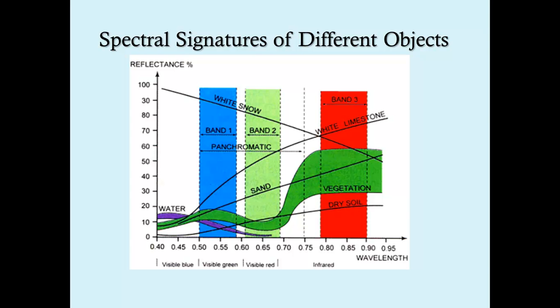You can see again that snow behaves differently than limestone, which is different from sand or vegetation, dry soil or water, all of which have those unique curves that help us identify objects.